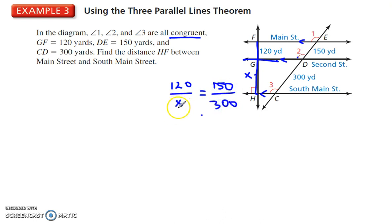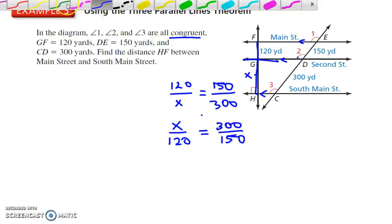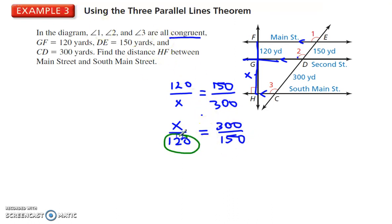Now, I don't like the x being on the bottom like that, so I'm going to flip that upside down. x to 120 is equal to, I need to flip this one upside down also, 300 to 150. And that's just a personal preference, that's not something you have to do. But that makes it easy for me to just go swoop. And then I have x is equal to 120 times 300 divided by 150.